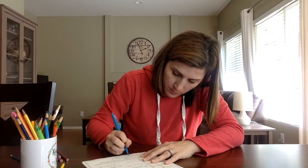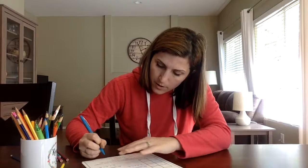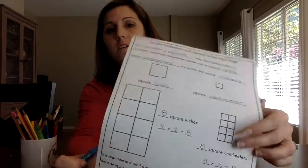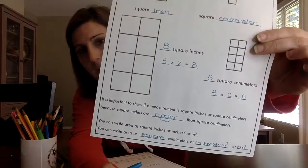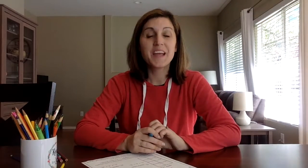You can write area as square centimeters, or centimeters to the power of two, or cm squared. Those are all the different ways to write it when you're working with area. It's time to tackle that output page — I'll see you next time.